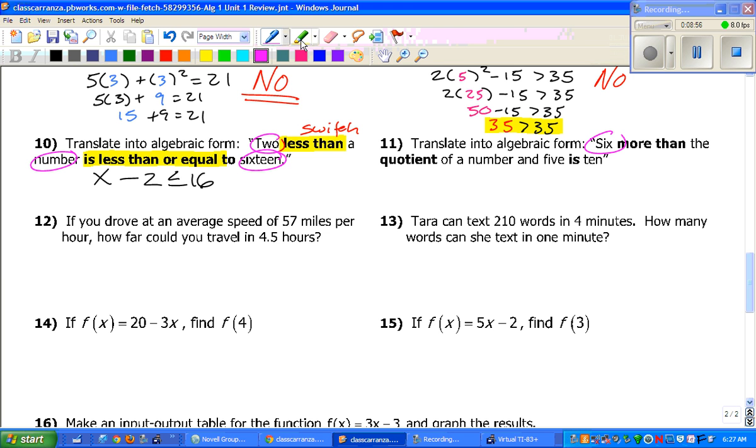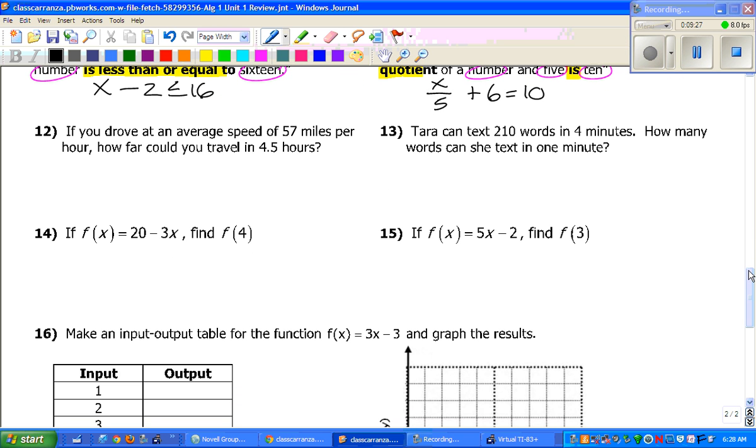Next one. It says, 6 more than the quotient of a number in 5 is 10. So, once again, more than, we have to switch. So, the 6 comes to the back. Quotient means to divide. And it is 10.